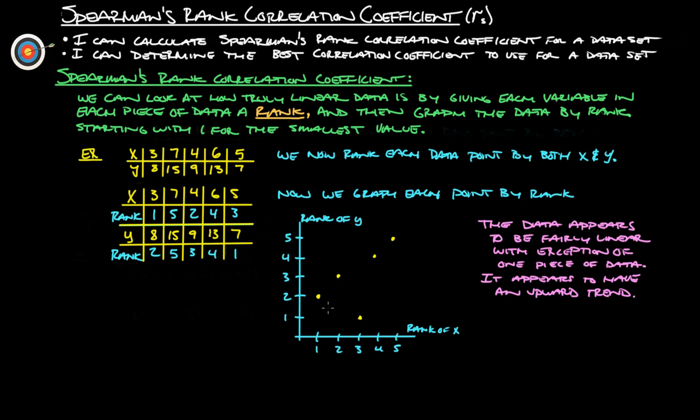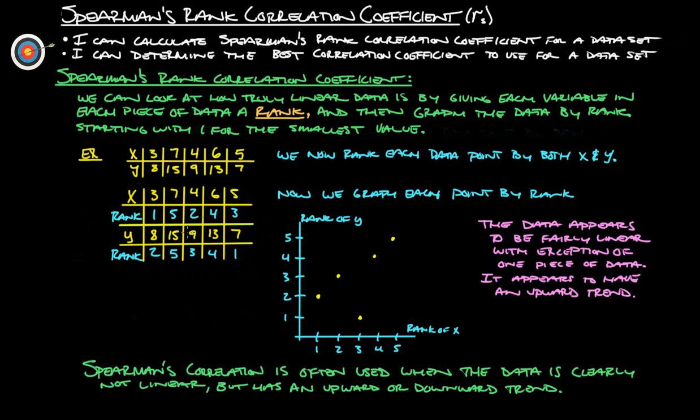By looking at this here, the data appears to be fairly linear with the exception of one piece of data, this right here. It appears to have an upward trend. So this is Spearman's rank correlation coefficient. Well, actually it's Spearman's rank, and then we'll talk about the correlation coefficient here in a second.